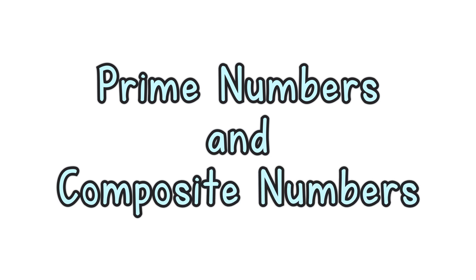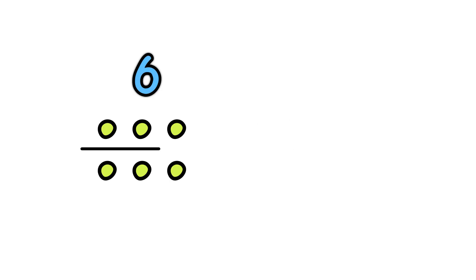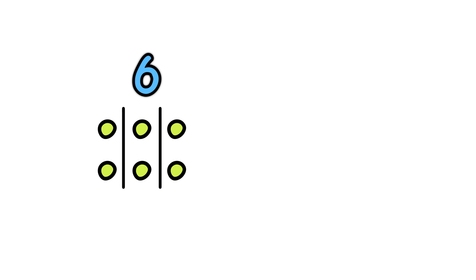Some whole numbers can be divided up evenly, and some can't. 6 can be divided evenly by 2 or by 3. 6 equals 2 times 3, like this — 6 divided into 2, or 6 divided into 3. But 7 cannot be divided up evenly.